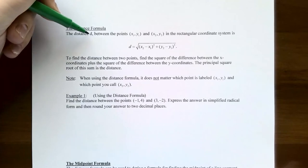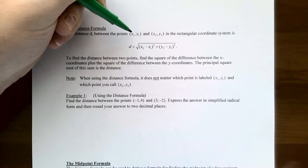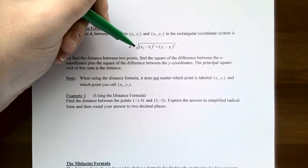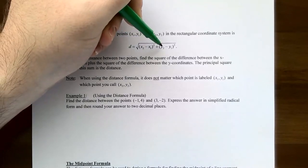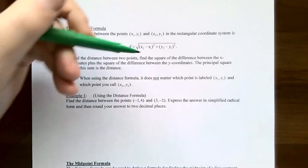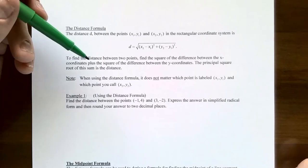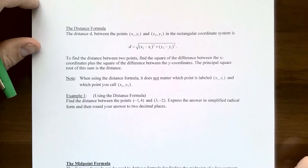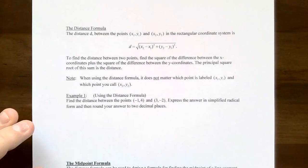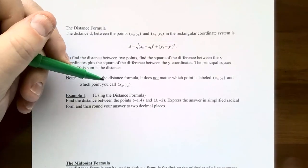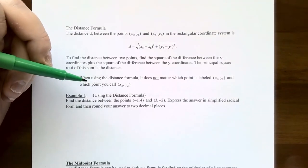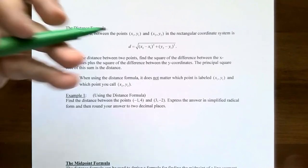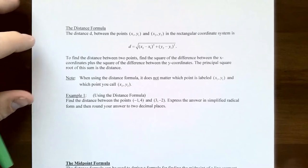The distance formula gives the distance d between any two points (x₁, y₁) and (x₂, y₂) in the Cartesian or rectangular coordinate system as d equals the principal square root of (x₂ minus x₁)² plus (y₂ minus y₁)². To find the distance: square the difference between the x coordinates, square the difference between the y coordinates, add those two together, and take the principal square root. One important note: it does not matter which point you call (x₁, y₁) or (x₂, y₂) — similar to the slope formula, you'll get the same answer either way.